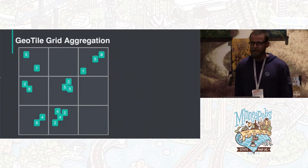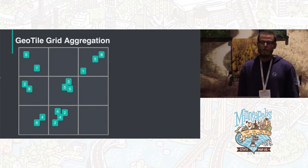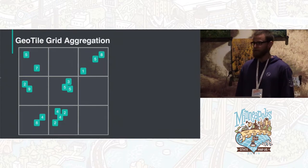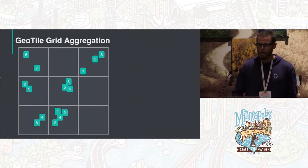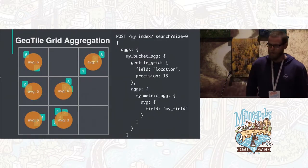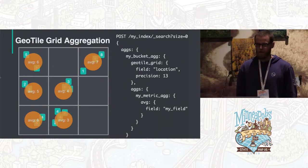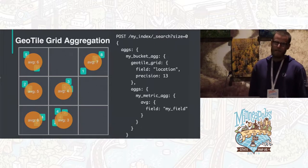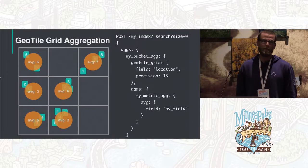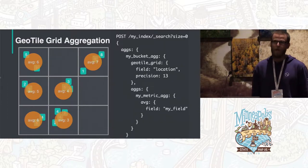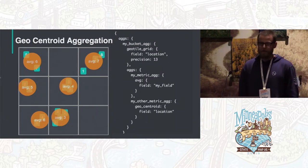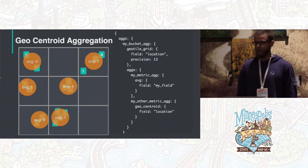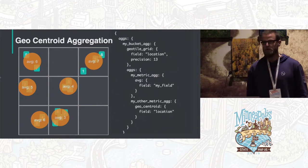Elasticsearch also has geospatial aggregations — not just terms or dates. You can break your data into grids and calculate metrics for each grid cell, all on the server, returning small pieces of information that are easy to visualize. The geotile grid aggregation produces tiles exactly the same size as Web Mercator tiles, mapping one-to-one with a web mercator grid. You can also run a centroid aggregation to place your dot where most activity is within a grid cell, rather than at the center of the cell.